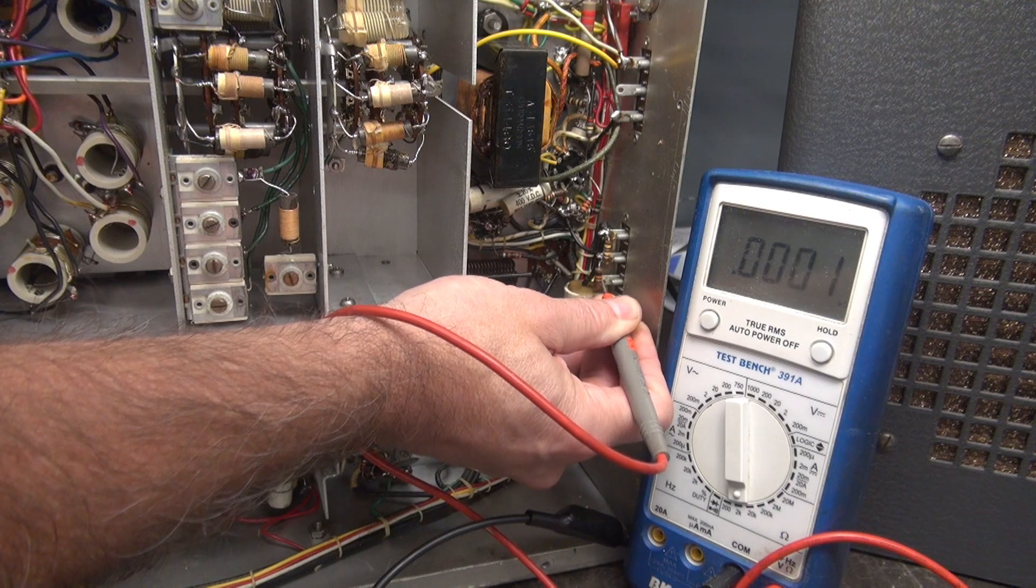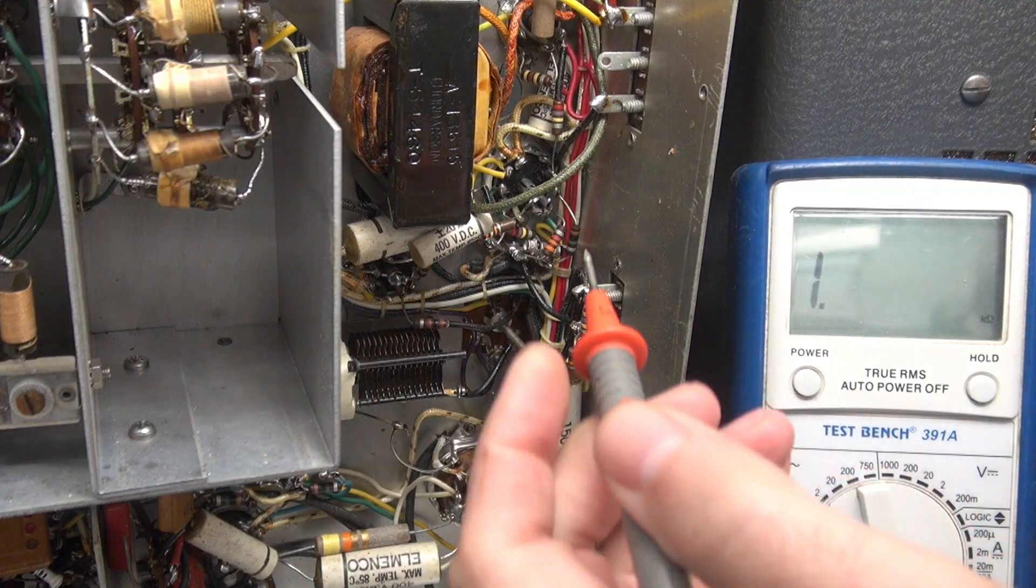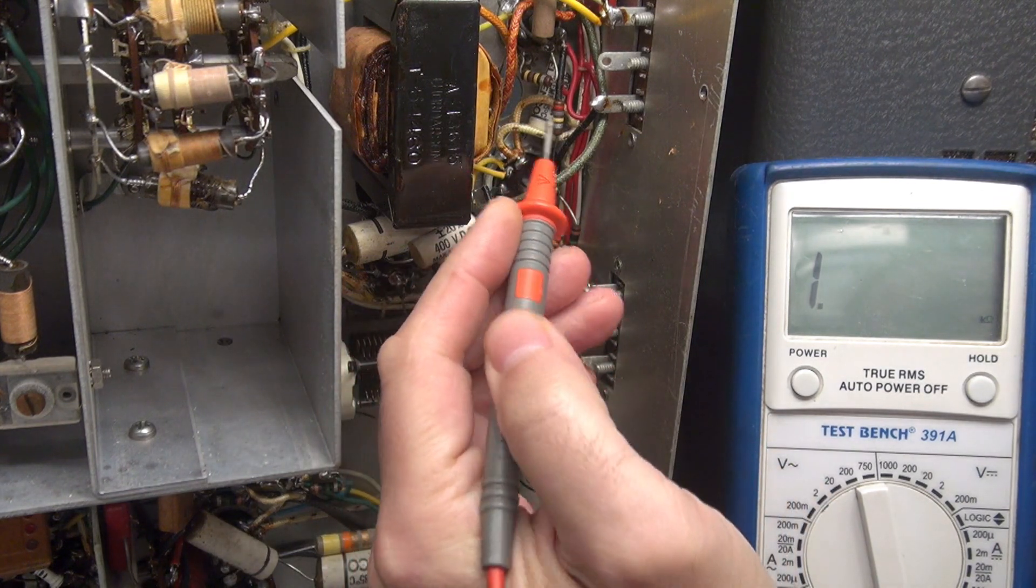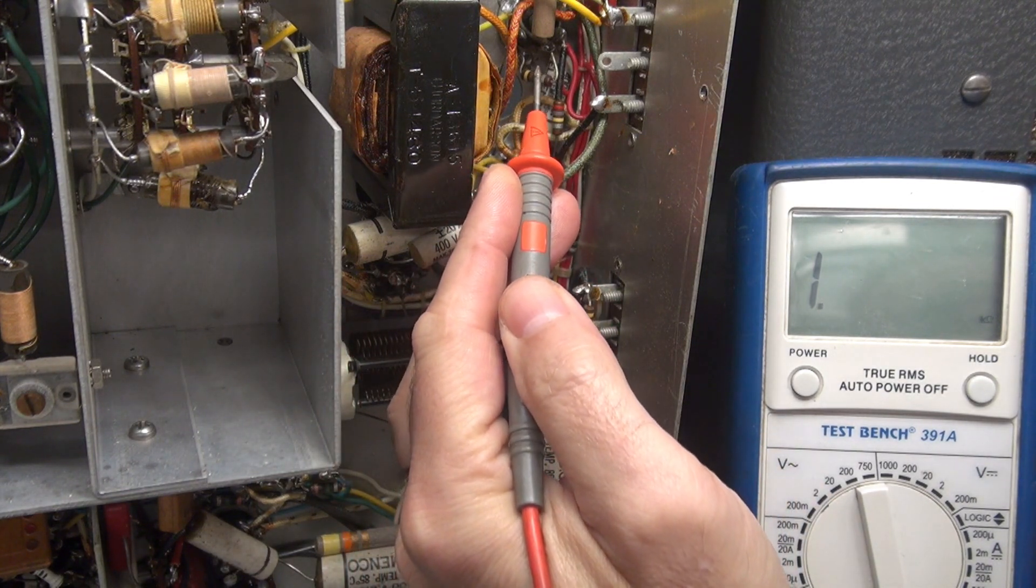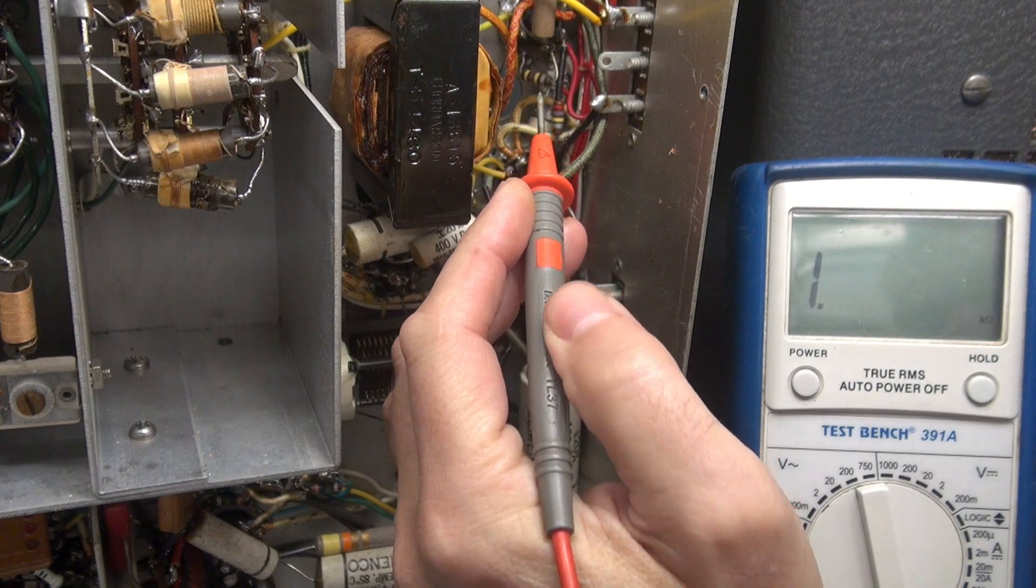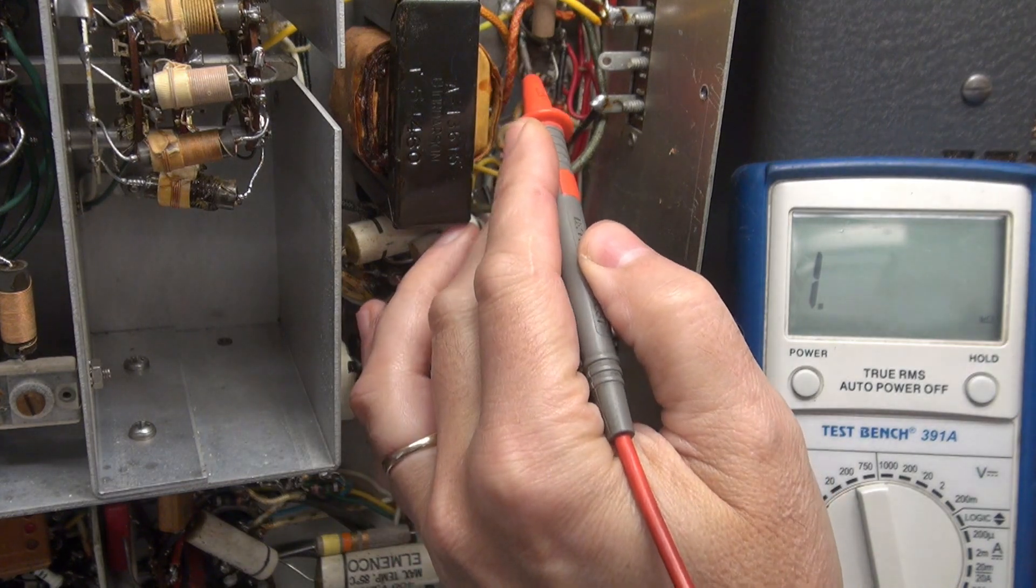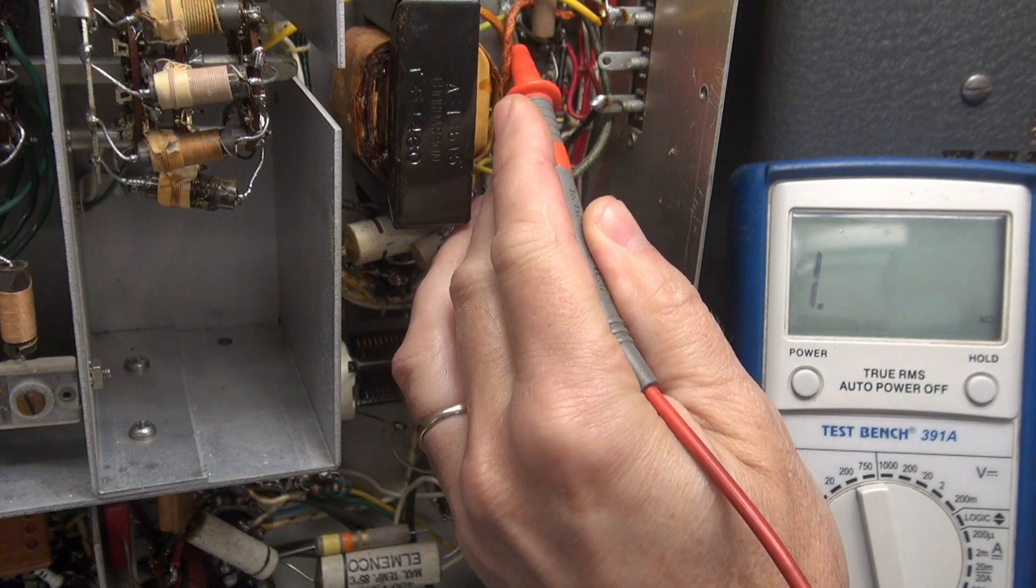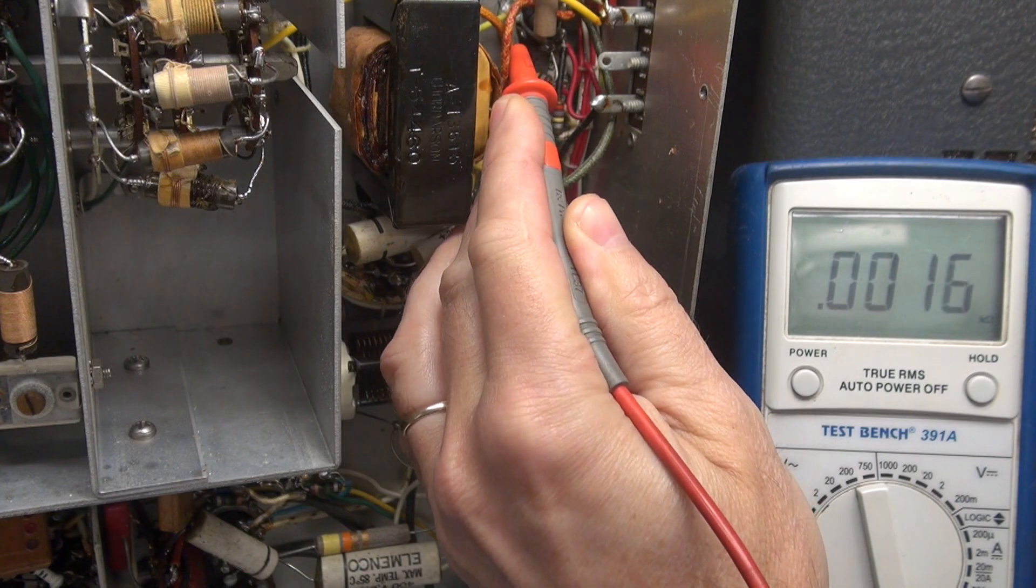All right, let's look a little closer. Pretty tight quarters here, guys. Right up there is the base of the 6AQ5 tube. So the pin that goes to the cathode is right there, pin 2, which goes to this 220 ohm resistor.